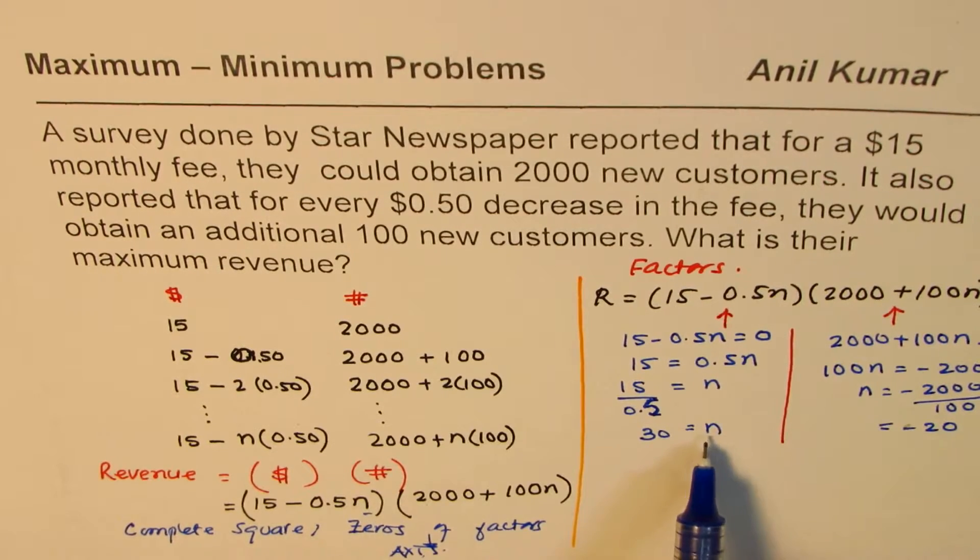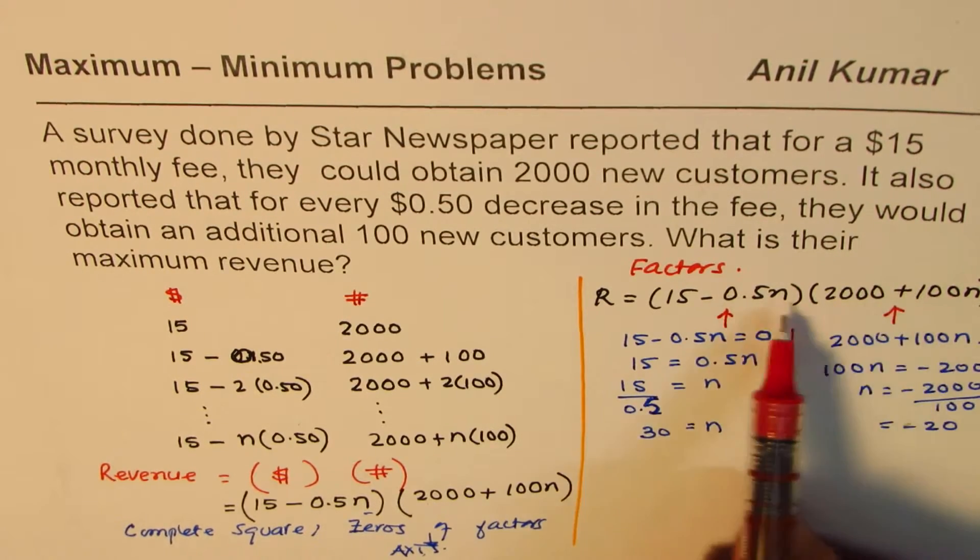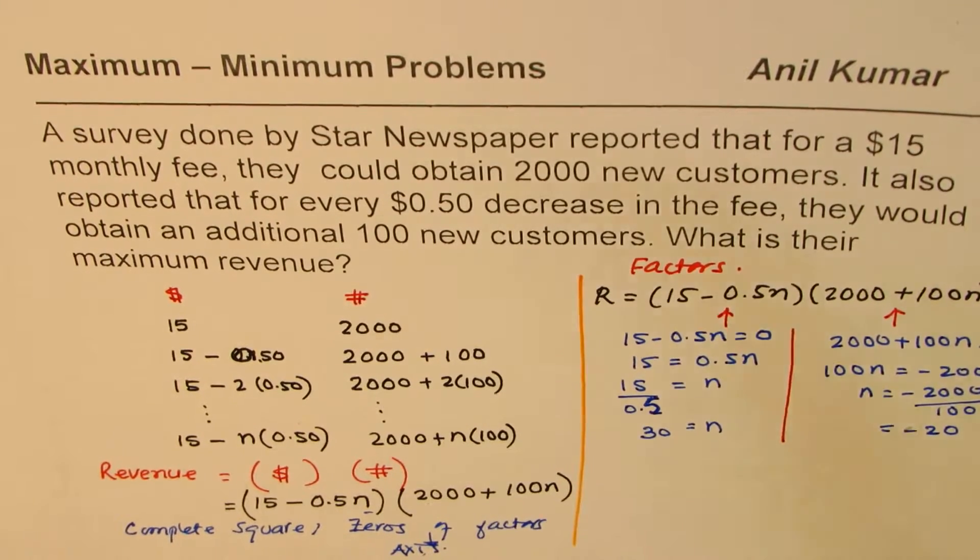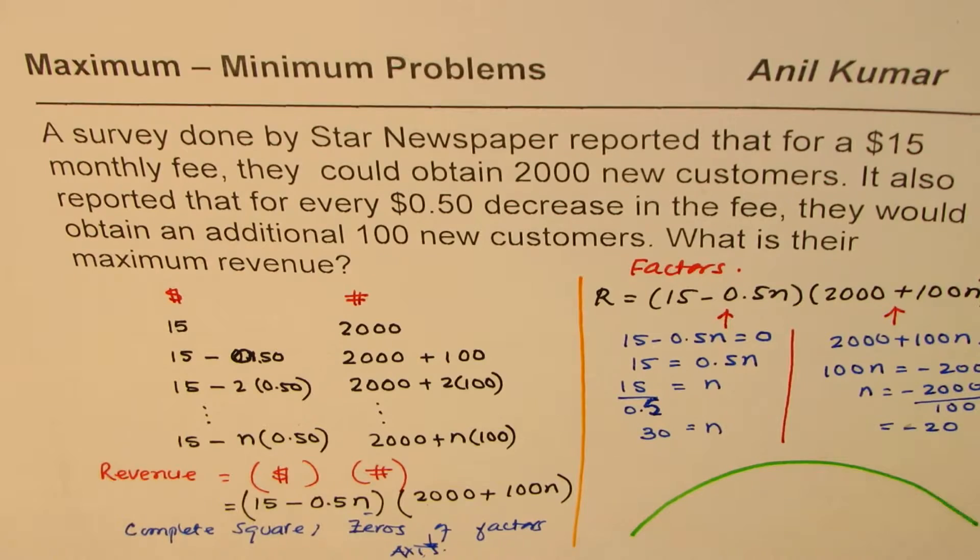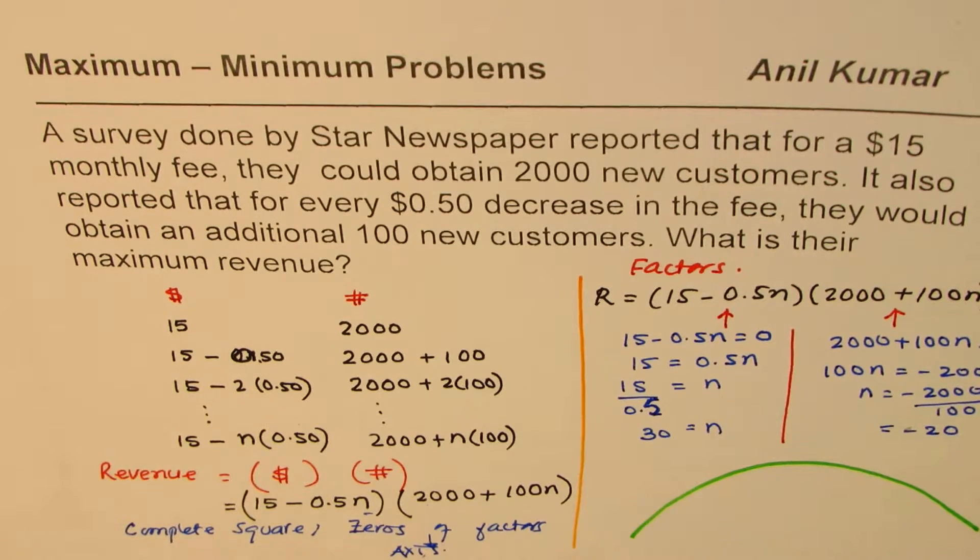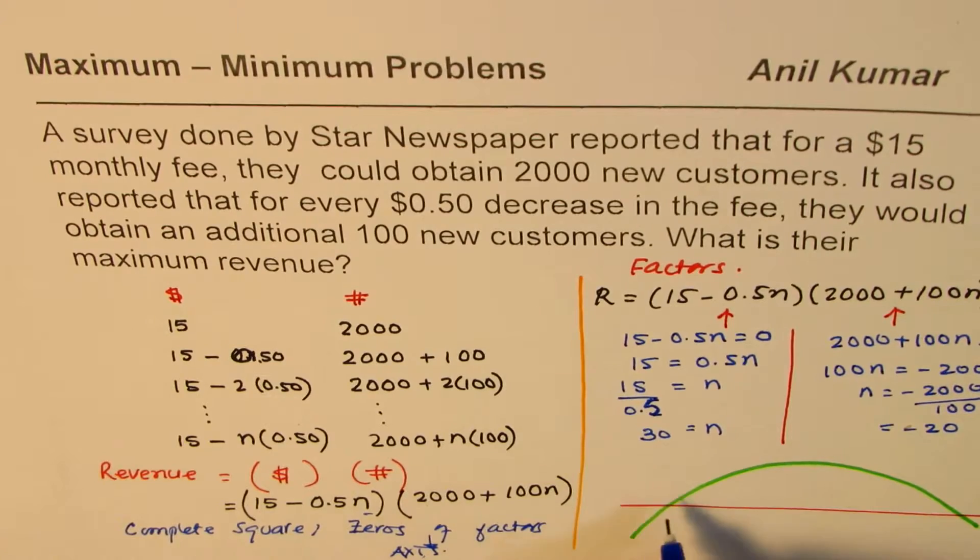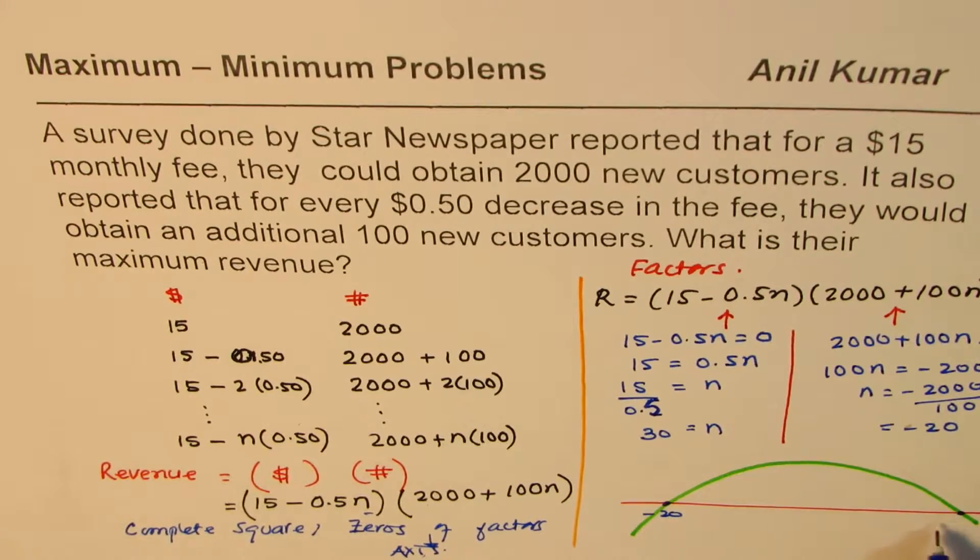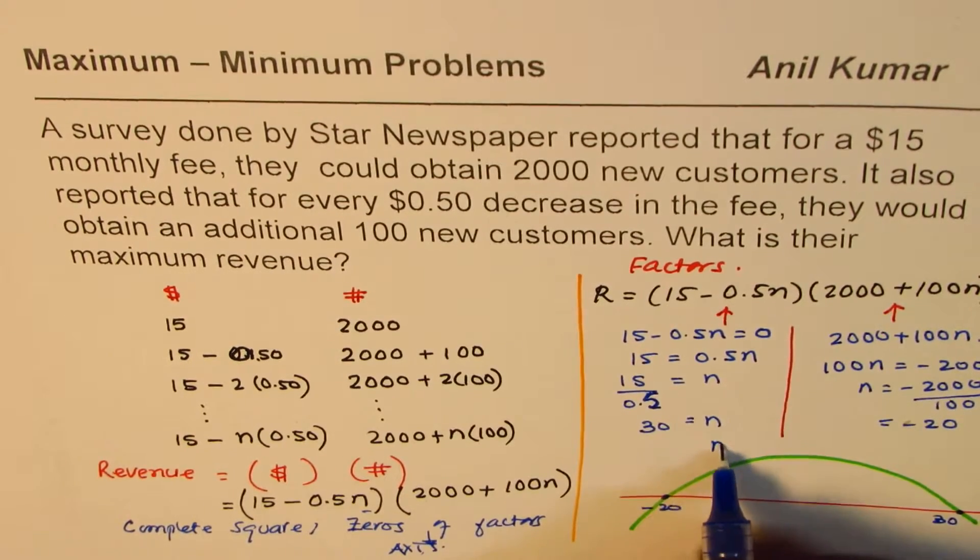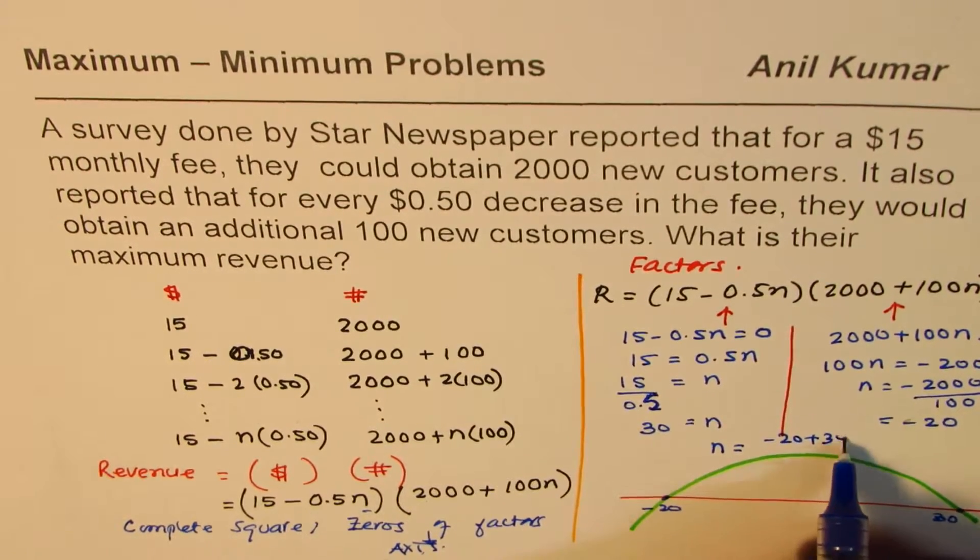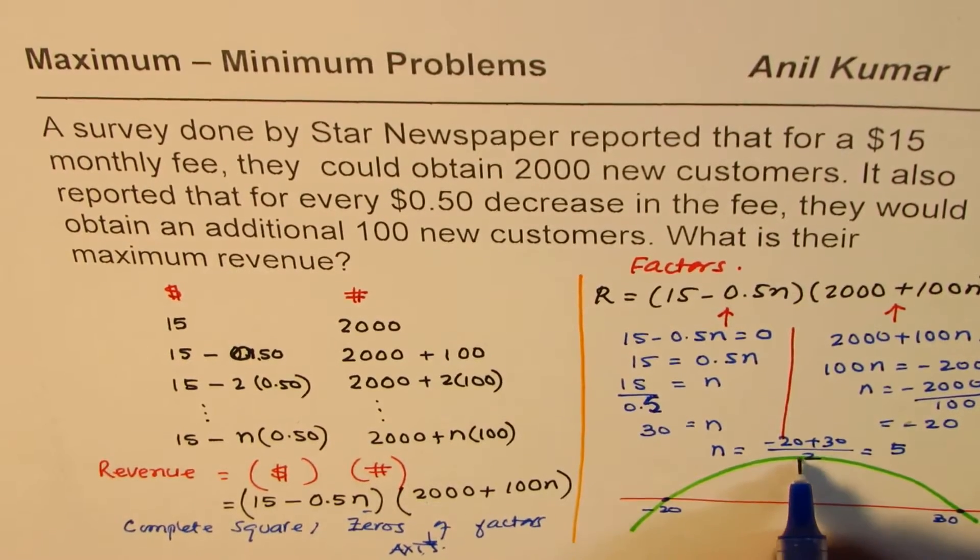So we get n value for zeros at 30 and minus 20. If you multiply, you'll see n squared is negative. So it's a parabola, which is kind of opening downwards. Let's understand the situation. So it's a parabola which is opening downwards. And therefore, we are having a maximum. And the two zeros, which we just figured out, are at minus 20 and at 30. So this is at minus 20. The other one is at 30. Maximum will be right in the middle. So right in the middle is n equals to minus 20 plus 30 divided by 2, which is 5. So right in the middle at n equals to 5, we have a maximum.